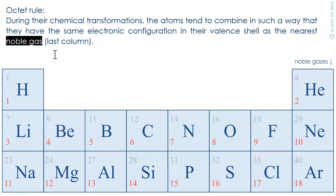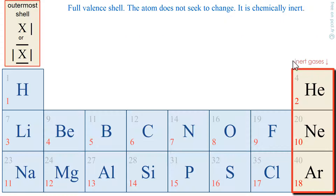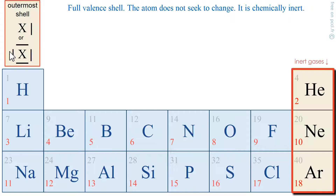The noble gases, or inert gases, are on the rightmost column. They have a full outermost shell and will no longer change. Helium has 2 electrons in its K shell. Neon is K2L8 — full valence shell with 8 electrons. Argon is K2L8M8 — full outermost shell with 8. They are so called inert because they do not react chemically. They are stable.